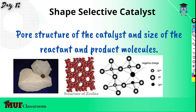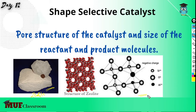The best example for Shape Selective Catalysts are Zeolites. This is how Zeolite looks, and this is the honeycomb structure of Zeolite. It has a network of Silicon, Oxygen, and Aluminium forming an Aluminosilicate structure — a 3-dimensional Aluminosilicate structure.